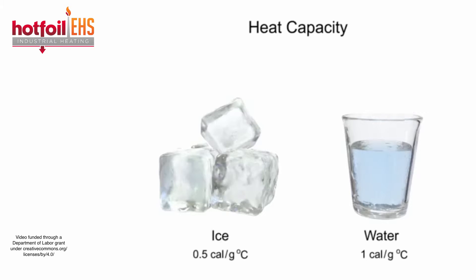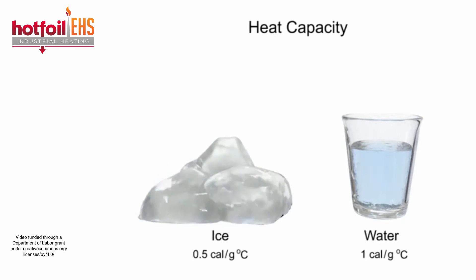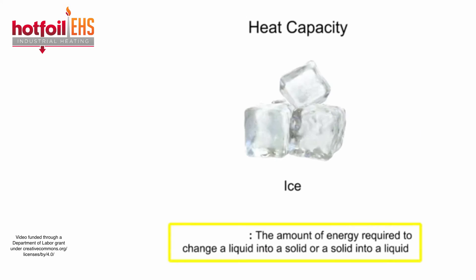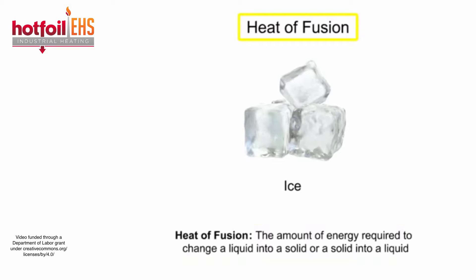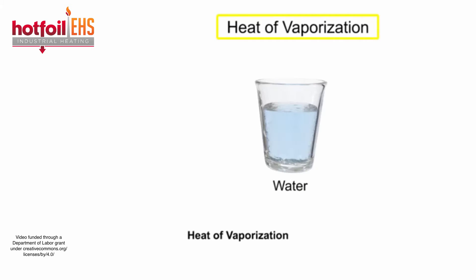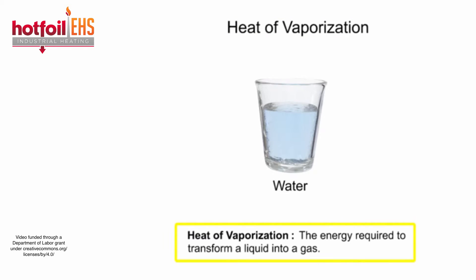The processes of phase change between solid, liquid, and gas also require a specific amount of heat energy. The amount of energy required to change a liquid into a solid or a solid into a liquid is known as heat of fusion. The amount of heat required to change 1 gram of ice to water is 80 calories. Similarly, the heat of vaporization is the energy required to transform a liquid into a gas — it requires 540 calories to change 1 gram of liquid water into a gas.